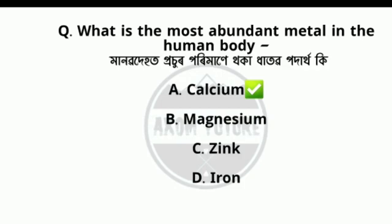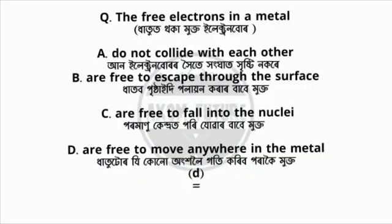What is the most abundant metal in the human body? Question 2.